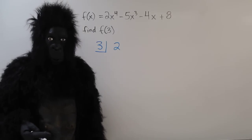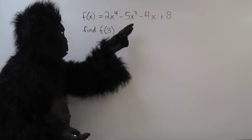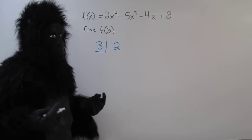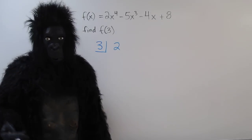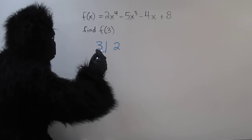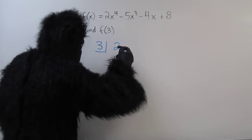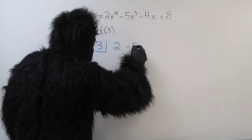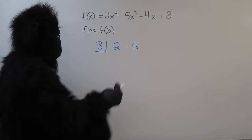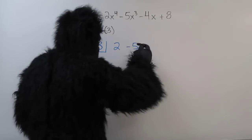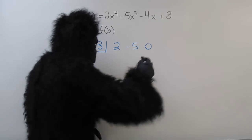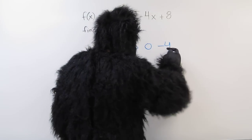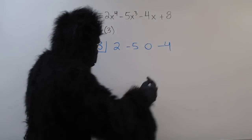Now we need to go and decrease in order. We have x to the 4th, we need to do x to the 3rd, we need to do an x squared, an x, and finally the constant term. Now the coefficient of x cubed is negative 5. The coefficient of x squared isn't there, so it's 0. The coefficient of x is negative 4. And finally, the constant term is 8.